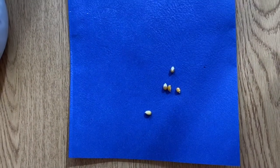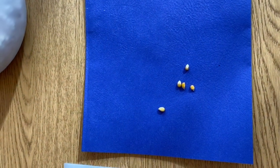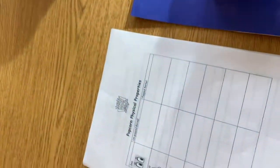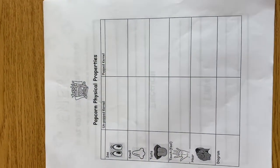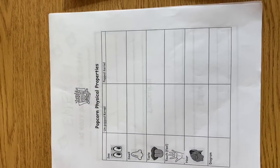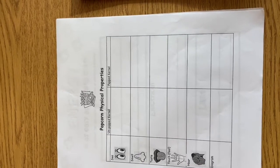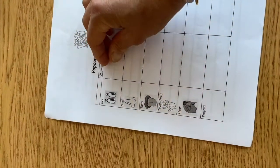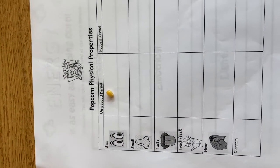So what we're going to do is there's a pre-lab or the pre-pop and the post-pop. An unpopped kernel of corn. You can see here we have this sheet. What are the popcorn physical properties or the physical properties of popcorn? First, you're going to look at an unpopped kernel of popcorn.